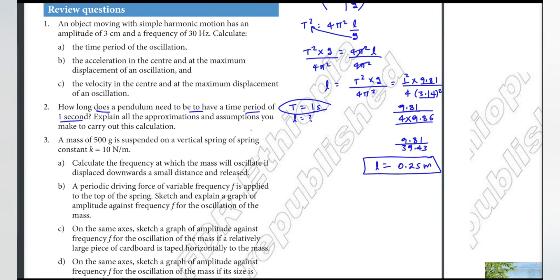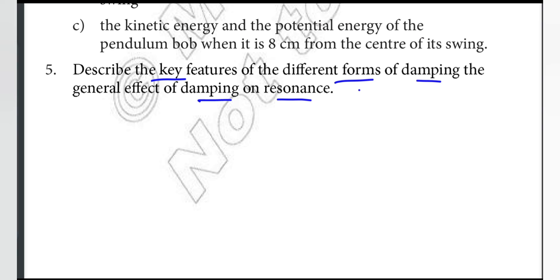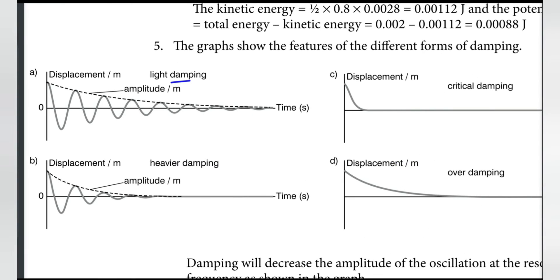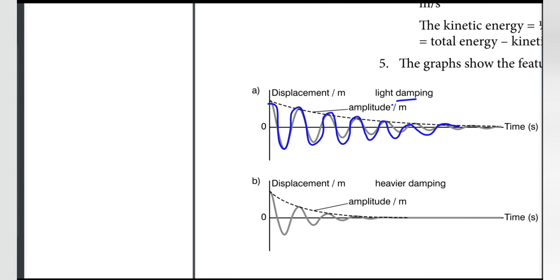Now describing the key features of the different forms of damping and the general effect of damping on resonance. When an object is oscillating, a resistive force acts against the velocity of oscillation — this is the damping force. For light damping, the object continues to oscillate but the amplitude gradually decreases over time.